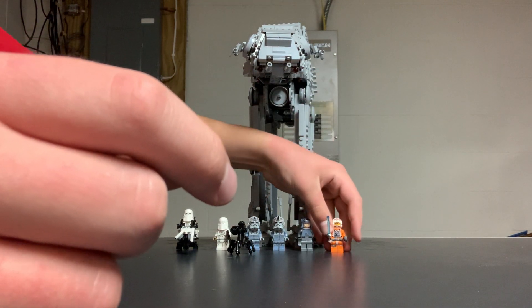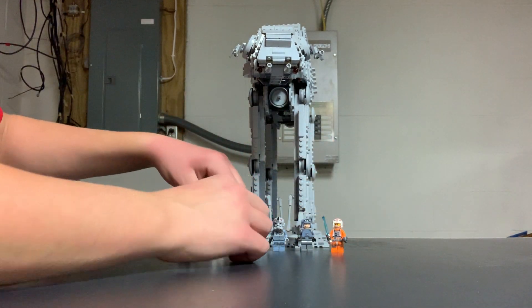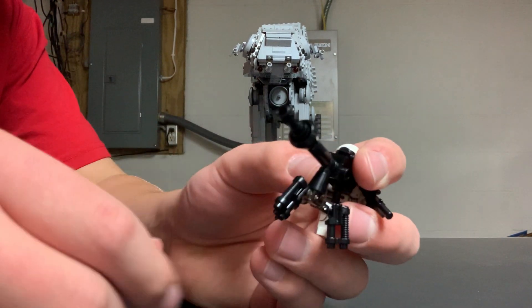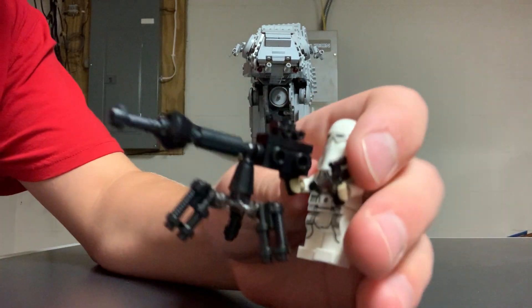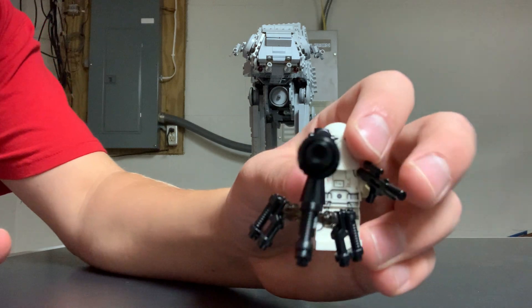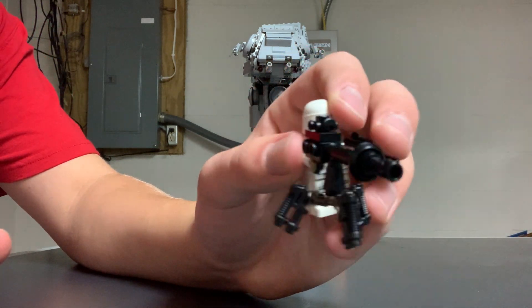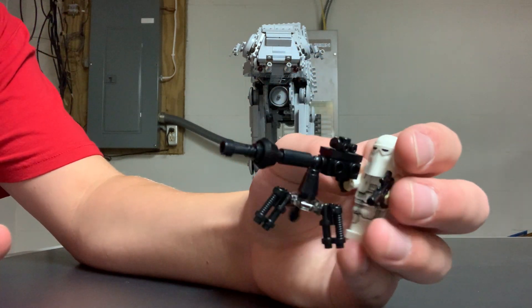And then we'll look at the side builds here, starting with the E-Web Blaster. Here we've got a nice E-Web Blaster. Snow Trooper can just grab it right there. It's a pretty nice looking build, a small little side build to the set.